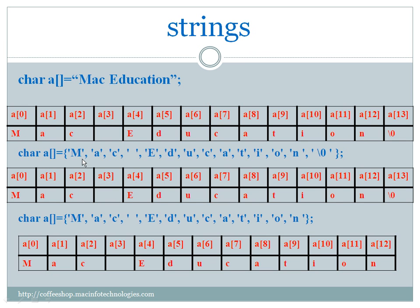If we initialize using single inverted commas, we have to put the null character at the last. Then it will be considered as a string array. If we don't provide a null character at the end of all the characters, it is not considered as a string. We will see why after some examples.